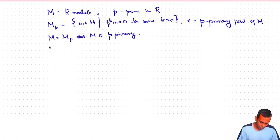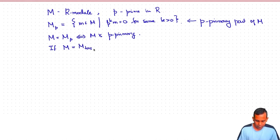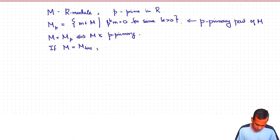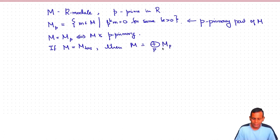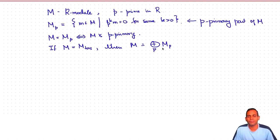Also, if M is a torsion module — meaning every element of M is annihilated by some element of the ring — then M is the direct sum over all prime ideals P in R of M_P. Only finitely many of these M_P's will be non-zero if M is finitely generated.